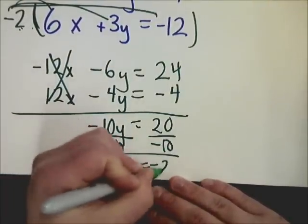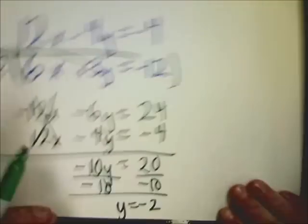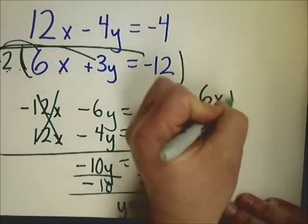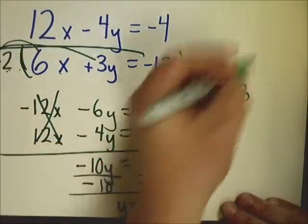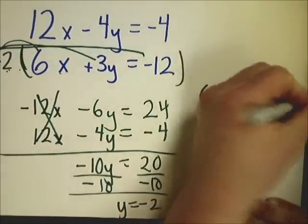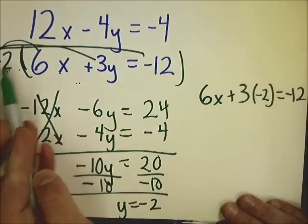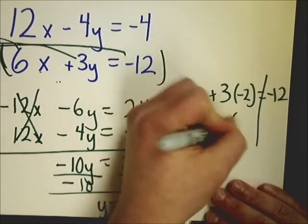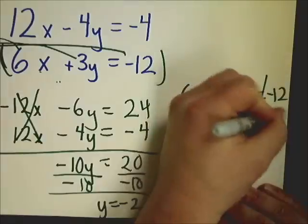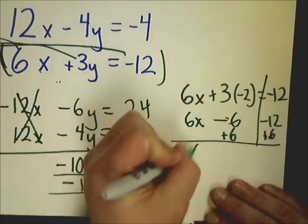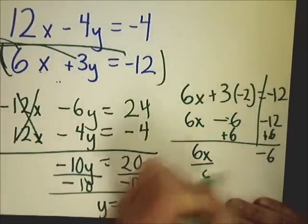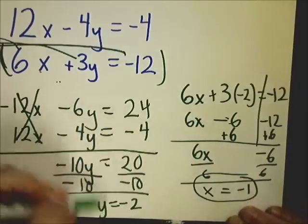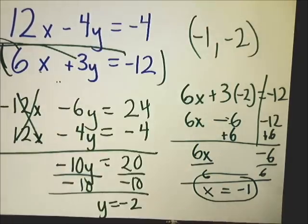And once you get to that point, it's the same thing. So you just go back in and plug it into one of the equations. 6x plus 3y is negative 12, so my y is negative 2. And you can plug it back into the original equation too. Minus 6 plus 6. Negative 6 divided by 6, x is equal to negative 1. So I have negative 1 and negative 2, and that's my answer.